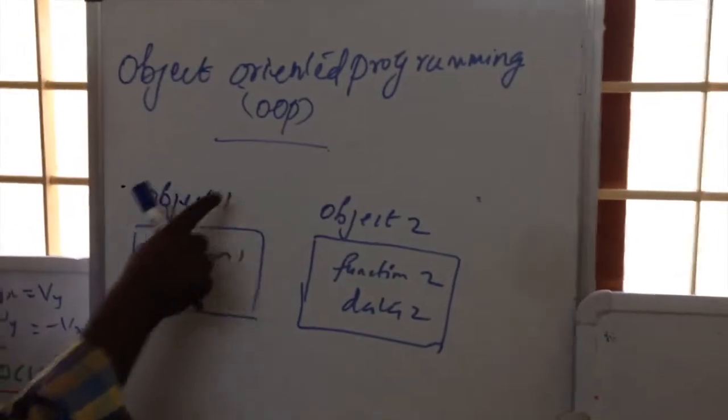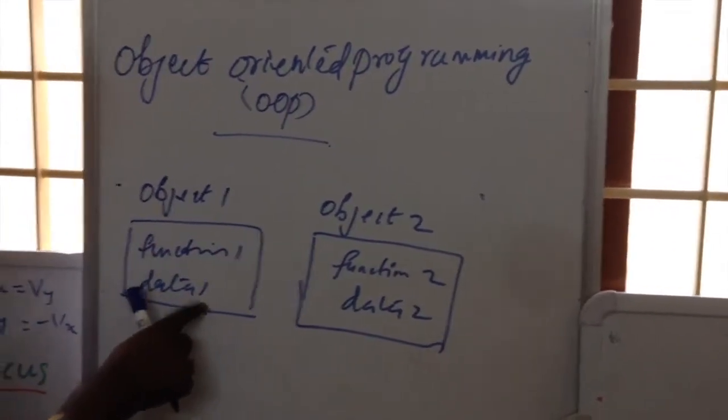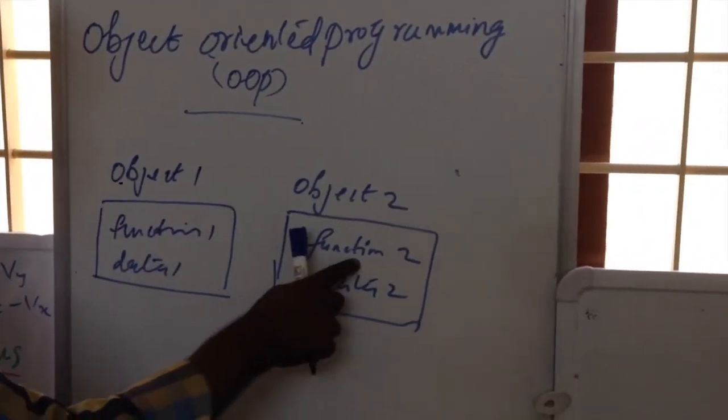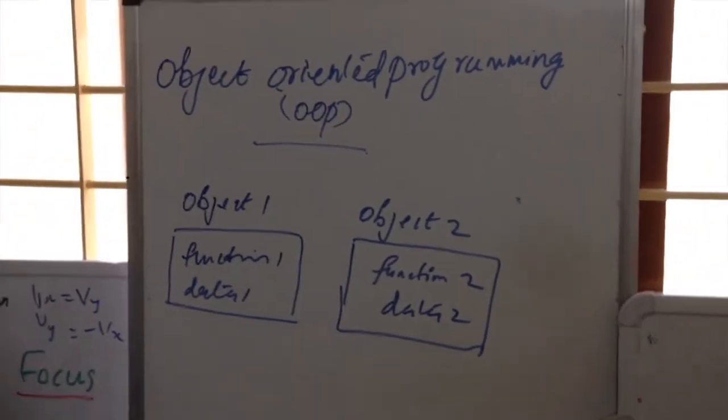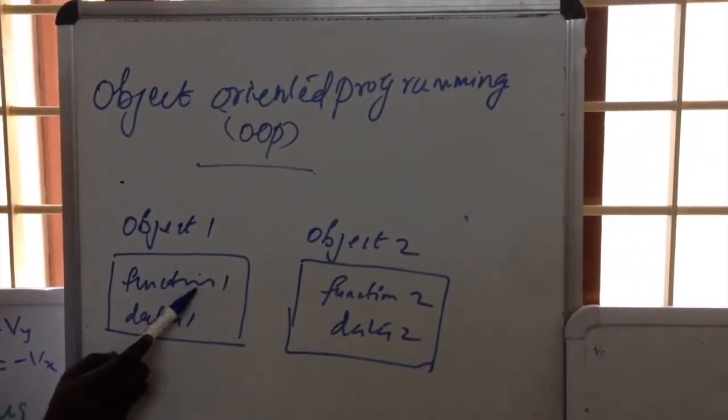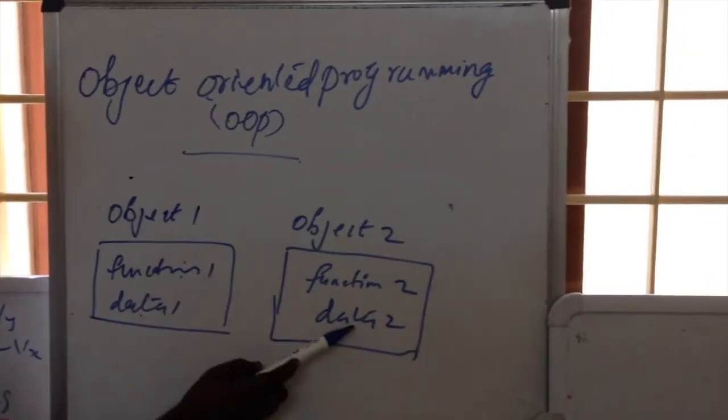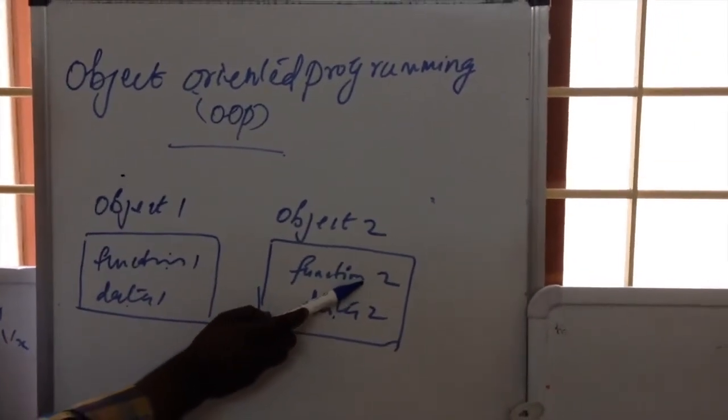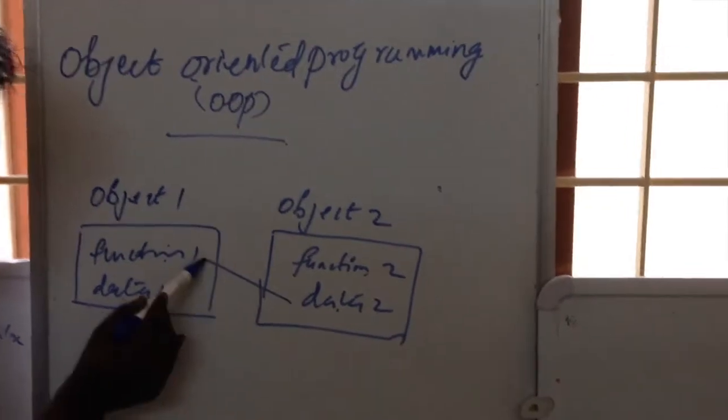This object-1 has its own function and its own data. This object-2 has its own function and its own data. This data-1 is available to function-1 only. This data-2 is available to function-2 only. This is not possible.